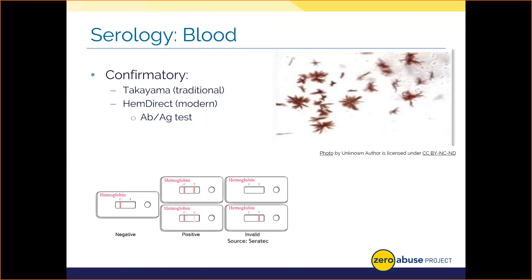HemeDirect is highly specific — it detects human blood, and you can get it to detect both injurious and menstrual blood. It's more selective and sensitive than Takayama. Best of all, analysts are not exposed to cancer-causing agents. HemeDirect uses principles from our own immune system. Basically, an animal like a rabbit is injected with human blood as an antigen to their immune system, and we harvest the antibodies from that immune reaction and put them on a strip with a color change compound.